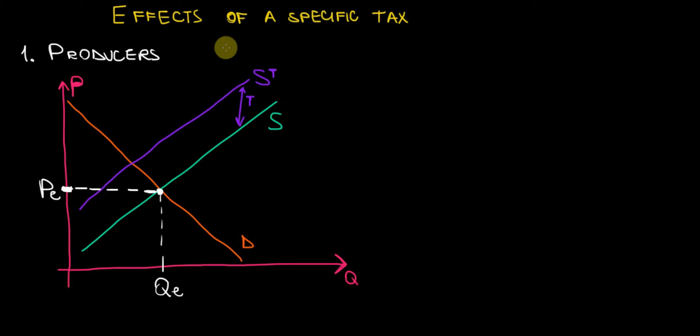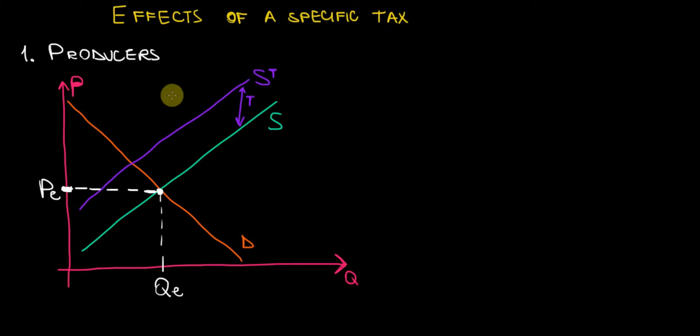In this video I would like to discuss the effects of a specific tax on the marketplace. We will discuss these effects on the producers, on the consumers, and on the government. From now on, in microeconomics and macroeconomics videos I will be making, I will talk about government interventions that we can prove graphically and how they affect the marketplace. When it comes to the marketplace we have to consider producers, consumers, and governments.